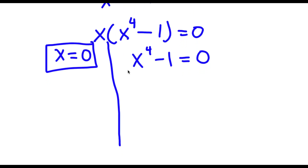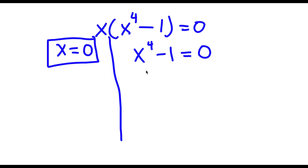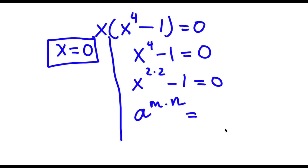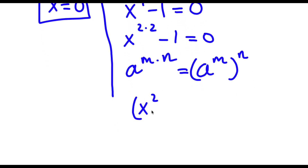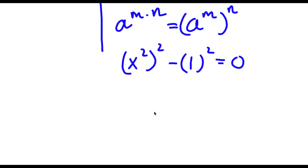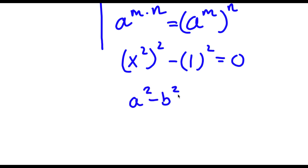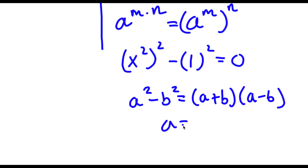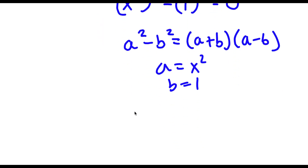So x to the power of 4 minus 1 equals 0. Well, x to the power of 4 — the exponent 4 is the same thing as 2 times 2. So if I replace 4 with 2 times 2, I get x to the power of 2 times 2 minus 1 is equal to 0. Now, if I have something in the form a to the power of m times n, I can write this as a to the power of m, to the power of n. So x to the power of 2 times 2 becomes x squared to the power of 2. And 1 is the same thing as 1 squared. So I have x squared to the power of 2 minus 1 squared is equal to 0.